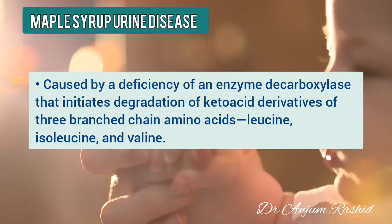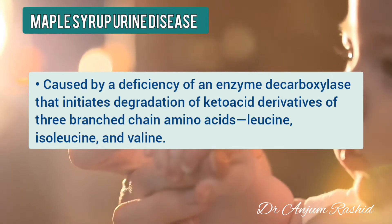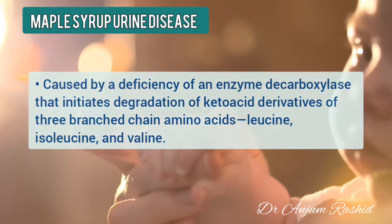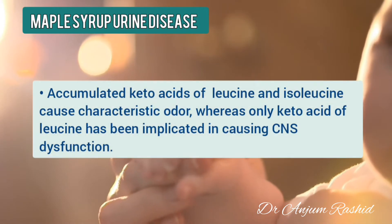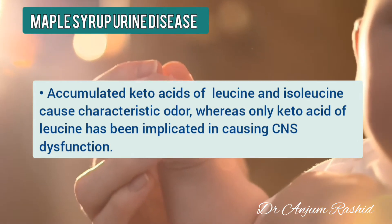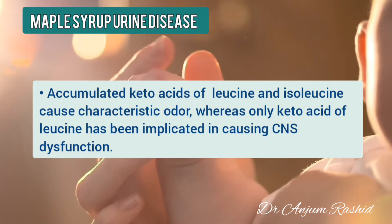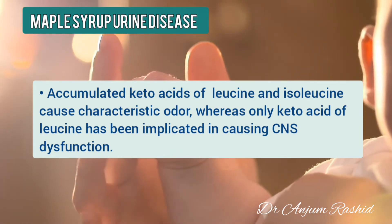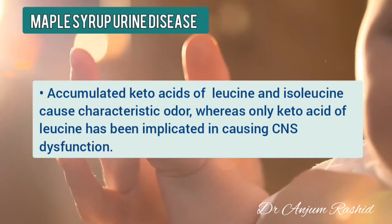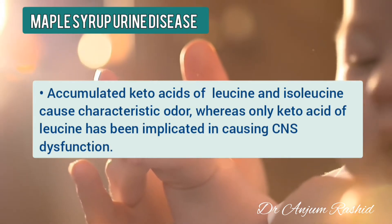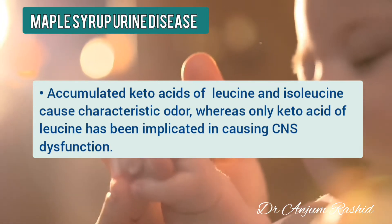The three branch chain amino acids are leucine, isoleucine, and valine. The accumulated keto acids of leucine and isoleucine cause the characteristic odor, whereas only the keto acid of leucine has been implicated in causing CNS dysfunction.